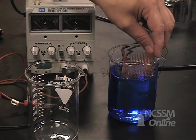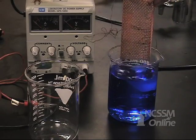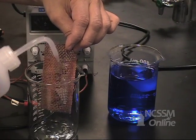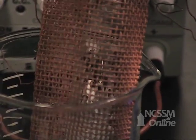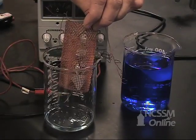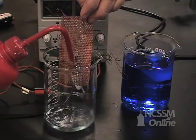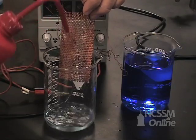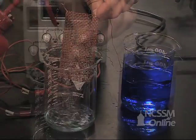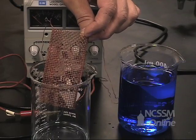We'll take the cathode and carefully rinse it with water to remove the copper sulfate solution. We'll then rinse the mesh with a little bit of acetone, which will help to evaporate the water. We'll allow the mesh to dry in the air until it's thoroughly dry.